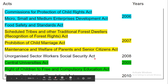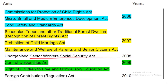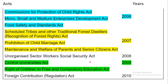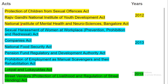Unorganised Workers Social Security Act was passed in 2008. Central Universities Act and Right of Children to Free and Compulsory Education Act — these two acts passed in 2009. Foreign Contribution Regulation Act was passed in 2010. Protection of Children from Sexual Offences Act, Rajiv Gandhi National Institute of Youth Development Act and National Institute of Mental Health and Neurosciences Bengaluru Act — these three acts passed in 2012.